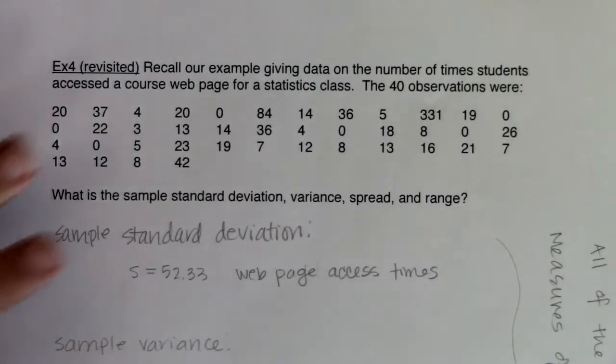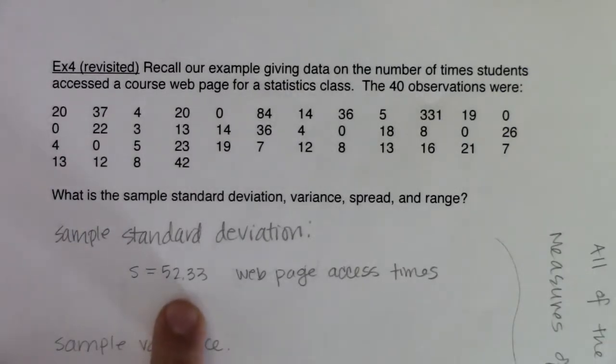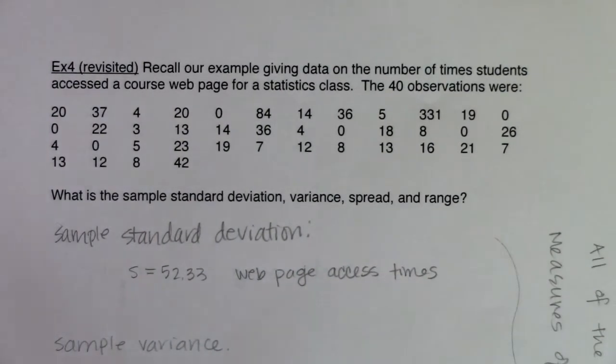We've seen now how to get all of these statistics on our calculator. I just want us to zoom out, take a step back, and look at what we've done. So we found the sample standard deviation. You see the number I got right from one var stats, and here are my units: web page access times. I believe when we first looked at example four, our units were times website was accessed. This is an alternate version of the units. They're both correct.